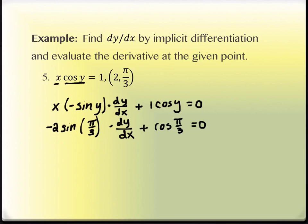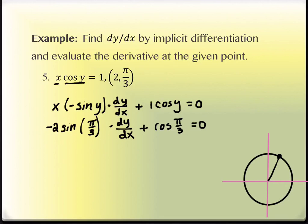At pi over three, you're in the first quadrant, closer to the y-axis. The y-value corresponds to sine — it's alphabetical: cosine comes before sine, x comes before y. So sine corresponds to y. The bigger value — square root of three over two — is the sine, and the smaller value — one half — is the cosine of pi over three.